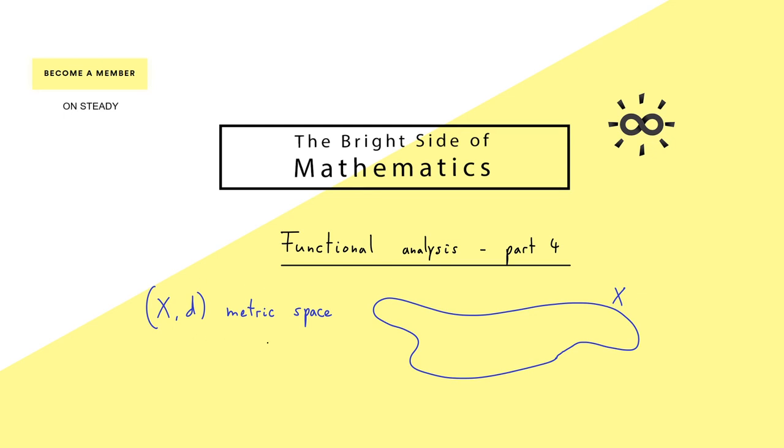Now for metric spaces it turns out that one can use sequences to describe the properties of a metric space. You might already know, a sequence is just an ordered set of points inside the metric space x.